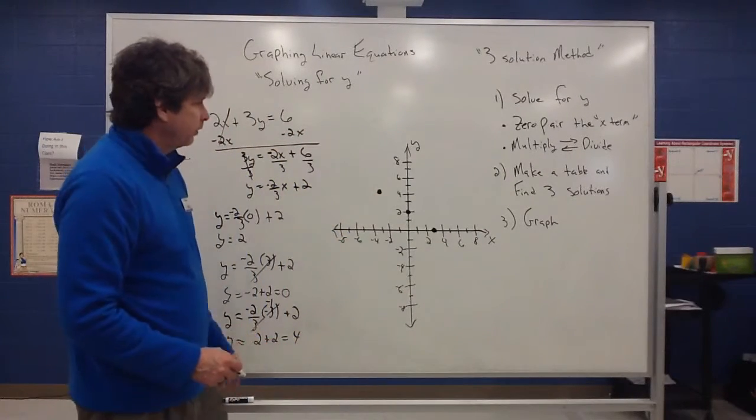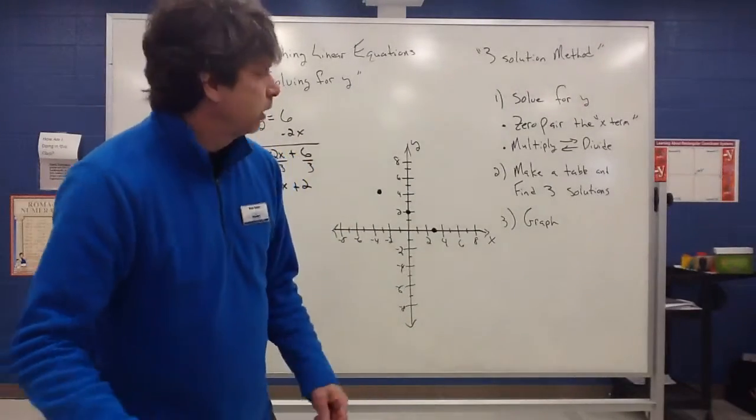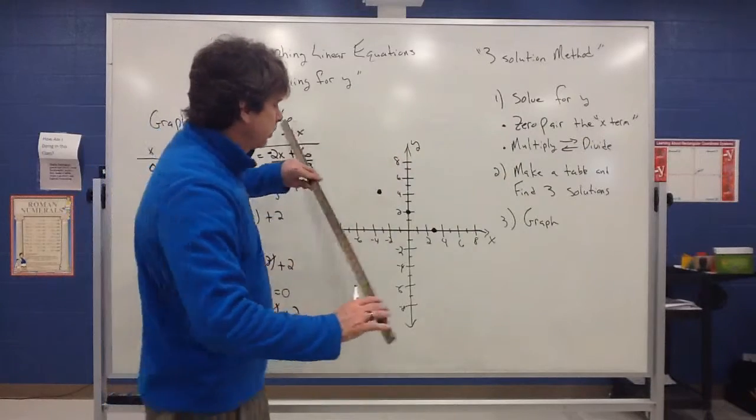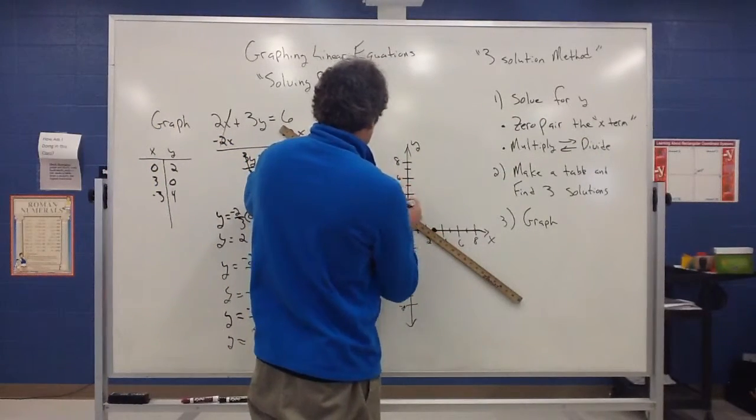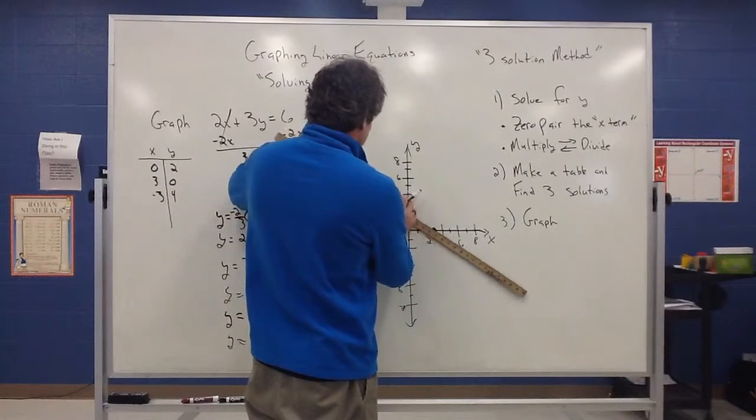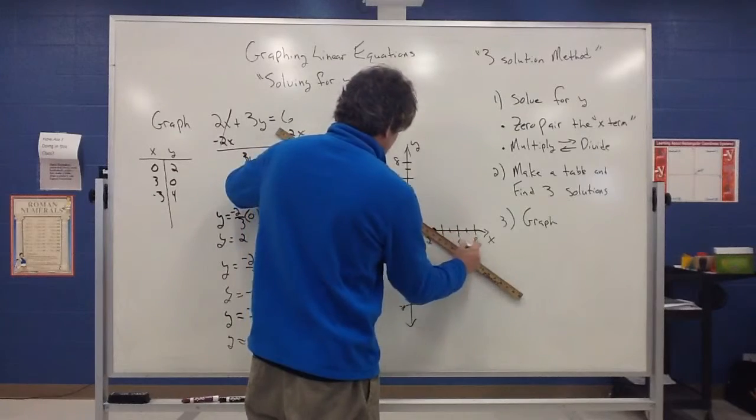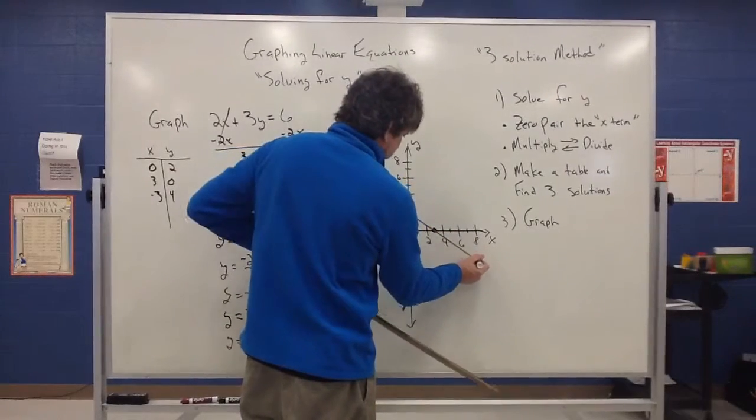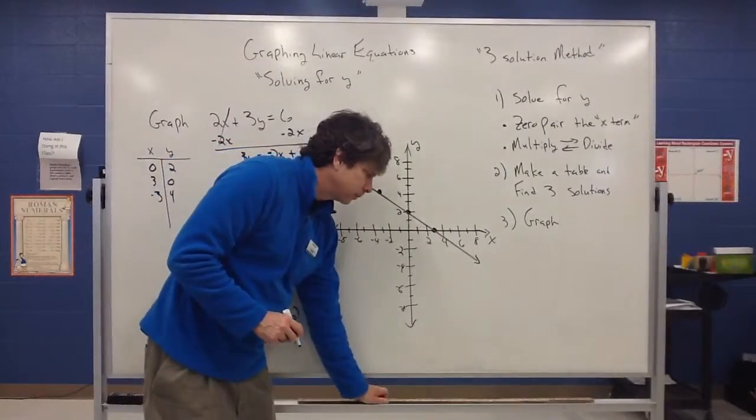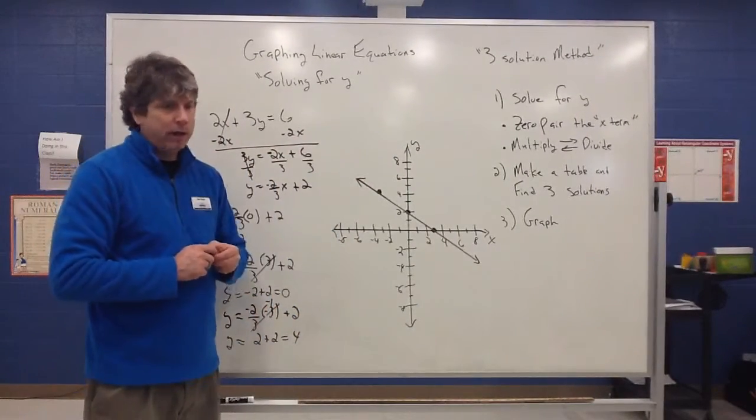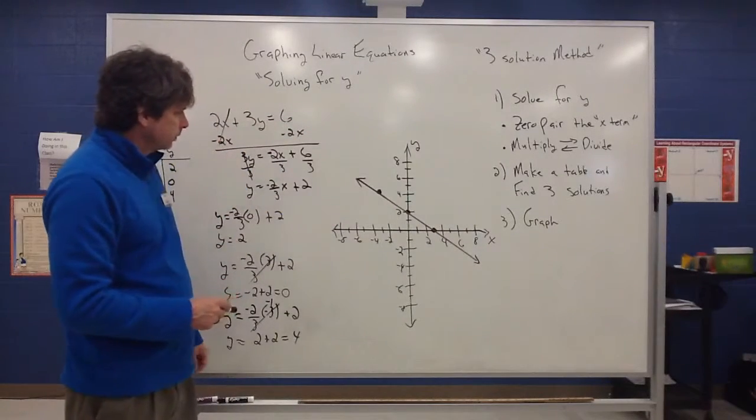So once I've found my three solutions and I've graphed them, all I have to do now is just graph the line that passes through those three points. So I've achieved my goal. I have graphed my line, which represents all the answers to this equation.